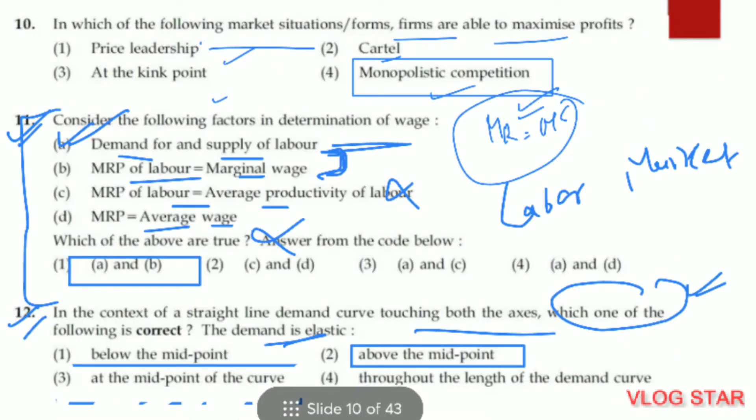Question number 10. In which market situation are firms able to maximize profits? Firms can maximize profits in monopolistic competition. The other three — price leadership, cartel, and kinked demand point — are parts of the oligopoly model. In price leadership, a firm must follow the leader; in a cartel, the whole group's profit is maximized; and at the kinked point, the firm must keep an eye on rival firms.